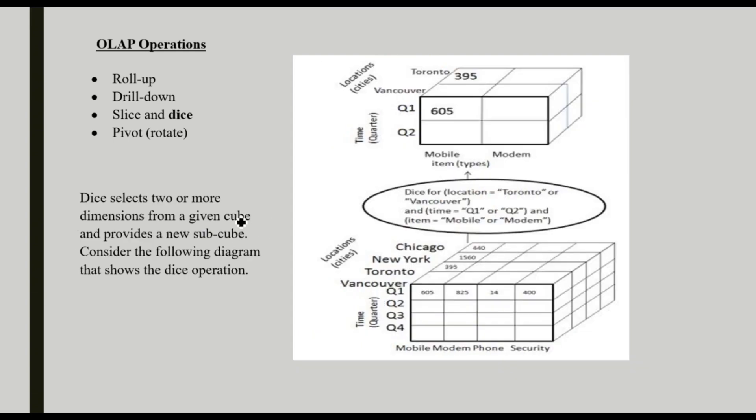Dice means we are making a new sub-cube with the same cube structure. Dice selects two or more dimensions from a given cube and provides a new sub-cube. This dimension is describing the dice operation. See here, in this we have the same data cube.